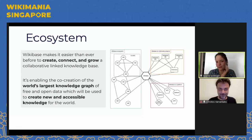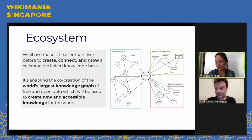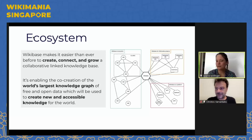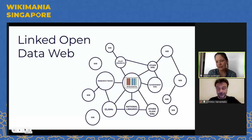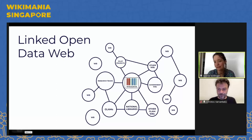One thing that makes Wikibase unique is that it doesn't see itself as a standalone project, but as part of a greater ecosystem. Its collaborative nature makes it easier than ever to create, connect, and grow a collaborative linked knowledge base, enabling the co-creation of the world's largest knowledge graph of free and open data. Looking at the next slide, you can see a scenario in which many different knowledge bases and projects are interlinked, nurturing and creating new knowledge together — and this is where we see Wikibase heading.